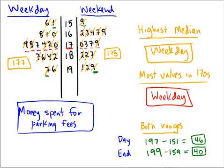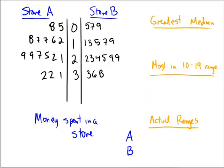Assuming that makes sense, re-watch the video and try this next problem on your own. Pause the video, try it, and then I'll do the worked-out example so you can check your answer. This next graph is about money spent in a store. Store A is on the left and store B is on the right. The value of 1 with the stem of 3 at store A corresponds to a value of 31, because 3 is the stem and 1 is the leaf.